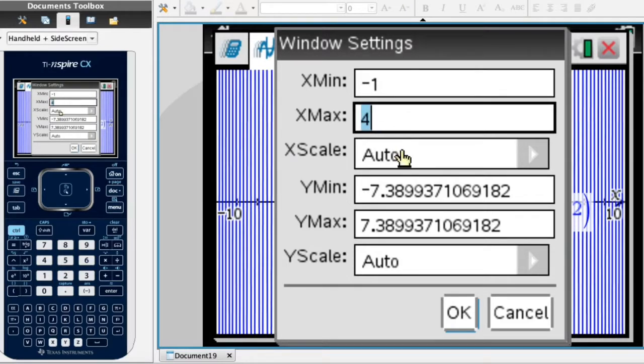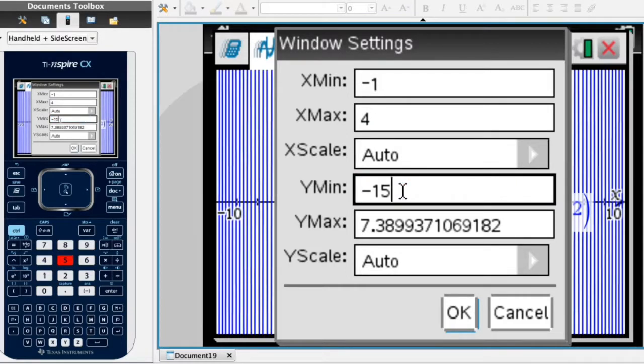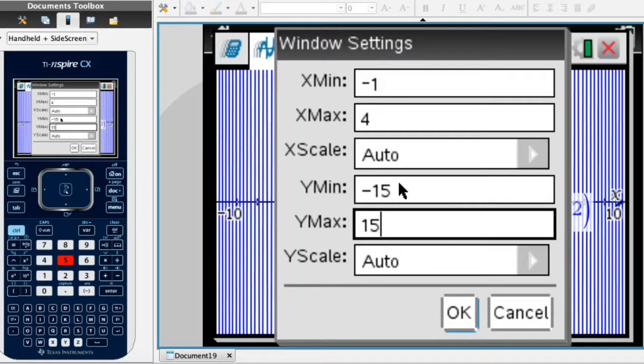And for the y min and y max values I'll go ahead and increase those a bit, because I could see that the curve was going all over the place. So I'll say y min equals negative 15 and y max equals 15. And that should work ok. I now click ok.